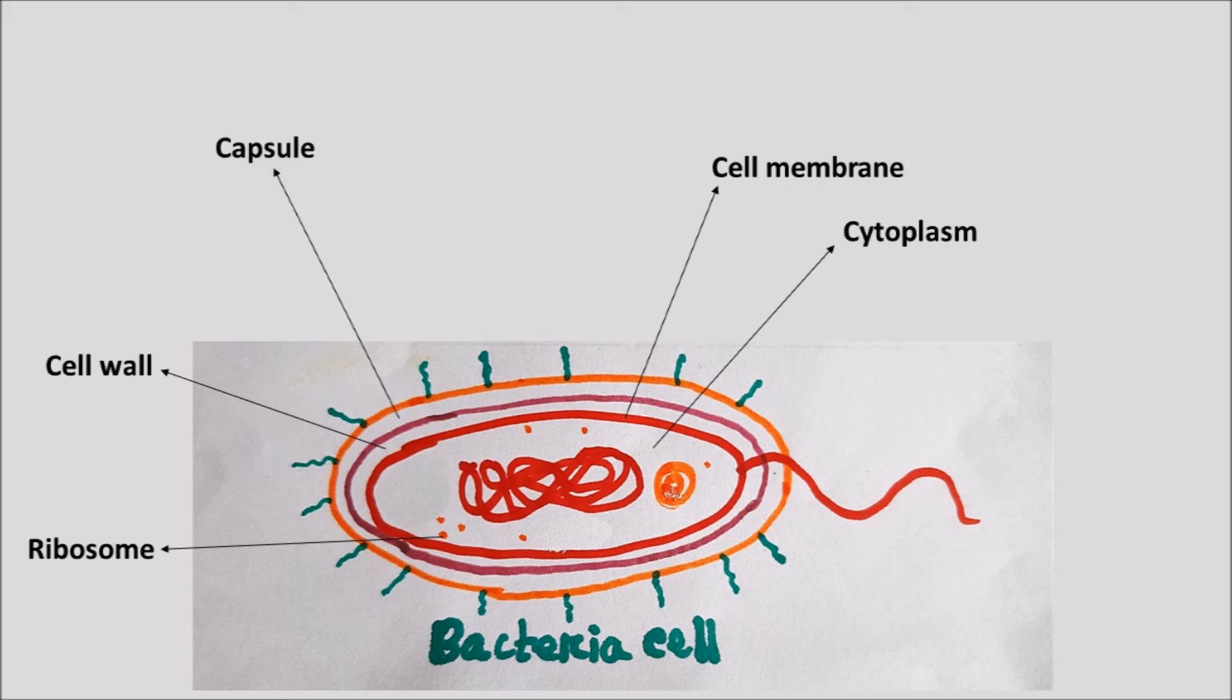There is another protective covering called the capsule. There is a tail-like structure that sticks out called flagellum, which helps the bacteria move. Many have outgrowths called pili, which bacteria use to attach to things. Bacteria don't have a nucleus, and its genetic material, like the chromosome and plasmid, just floats in the cytoplasm.